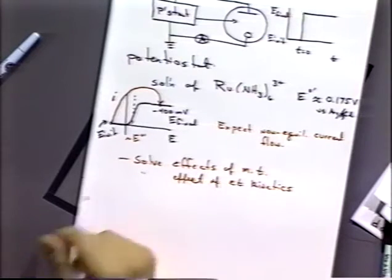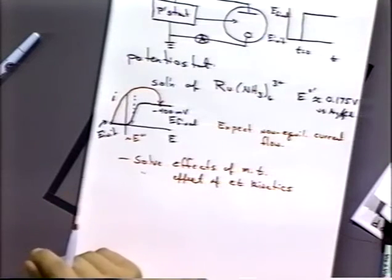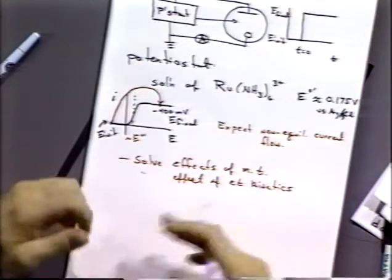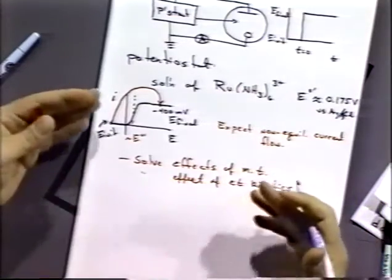The electron transfer kinetics may also have to be considered in the system, and the effect of a chemical process occurring simultaneously with electron transfer also has to be considered. There are all sorts of things that would ultimately have to be considered to get a complete solution of the current-time-potential characteristics.